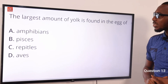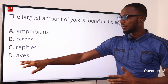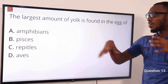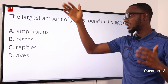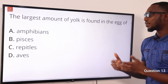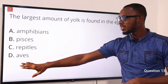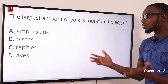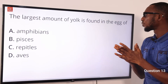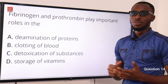Question 13: The largest amount of yolk is found in the egg of which animal? It is found in the egg of a bird. Arranging animals by evolutionary complexity: Pisces, then amphibians, then reptiles, then birds, then mammals. The correct option is D: bird — the largest amount of yolk is found in the egg of a bird.